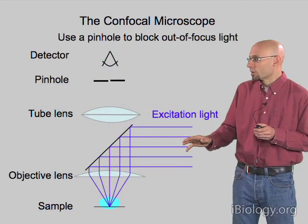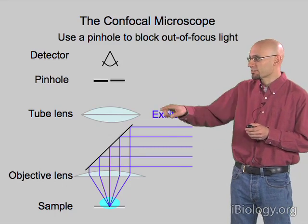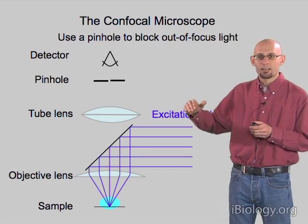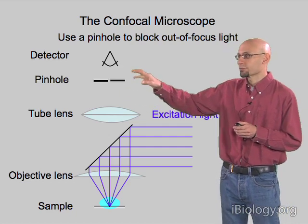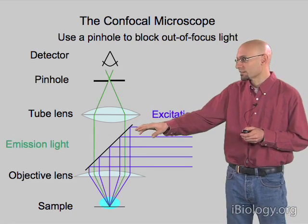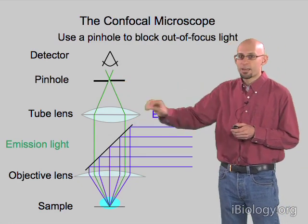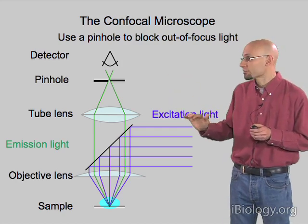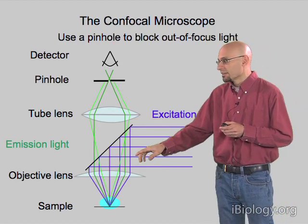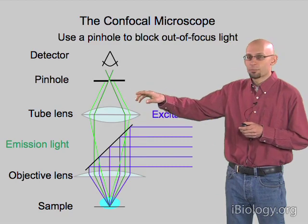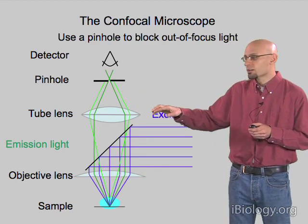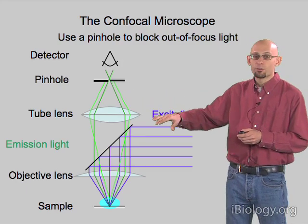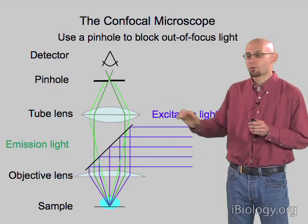The trick in a confocal microscope is to physically block that out-of-focus light by replacing our camera with a pinhole, placed such that it exactly passes the light that's in focus. That light will come to a focus at that spot, make it through the pinhole, and reach the detector. The corresponding out-of-focus light will make a big fuzzy disk on the pinhole, which will block the majority of that light and prevent it from reaching the detector. So now we've arranged our microscope to only see the in-focus information.